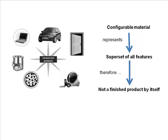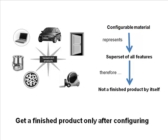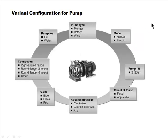Therefore it's not really a finished product by itself - it has to be configured, then it becomes a real finished product. By itself it's just a superset with the potential to become any of those thousand things. The actual bill of material and routing to make each of those would be different. For example, a pump which is a configurable product has pump type options, mode options, lift varying from 2 to 20 meters, etc.